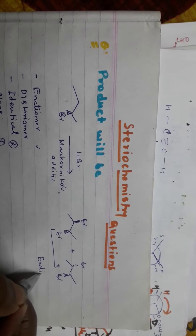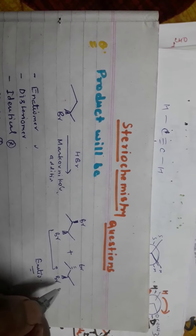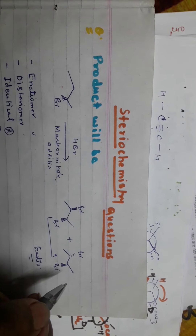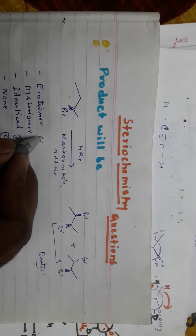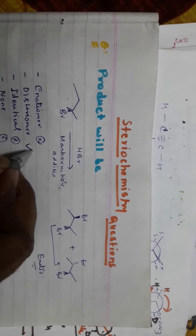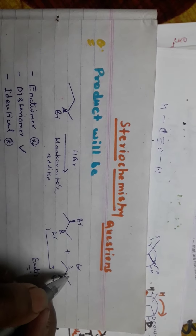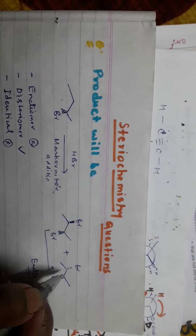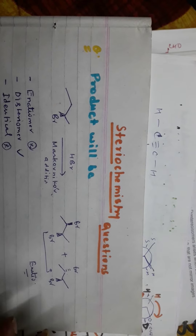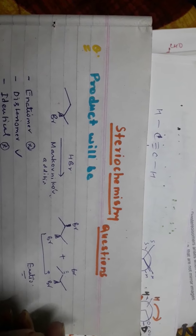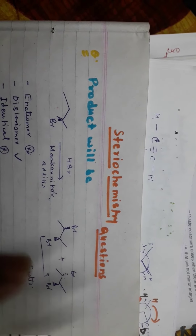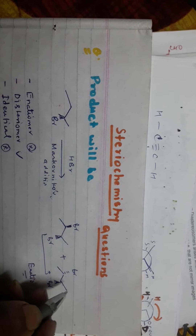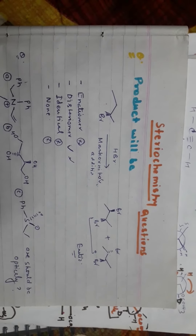The definition of enantiomers is that the product should be non-superimposable but should be a mirror image. Here the products are not mirror images of each other, so they are not enantiomers. Diastereomers remain because these are mirror images but superimposable — like putting right and left hands together they become non-superimposable. Since these are superimposable, the answer should be the R,S-racemate.